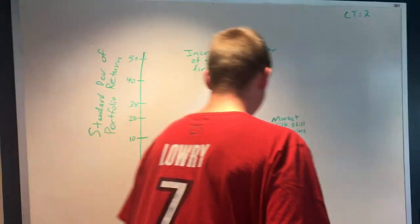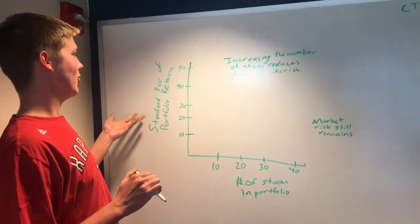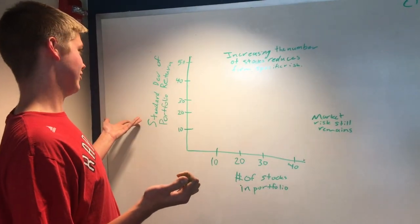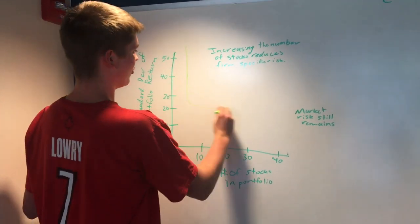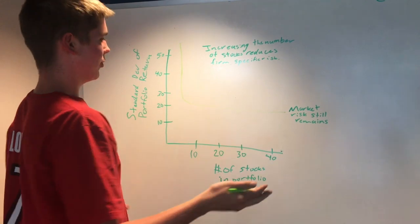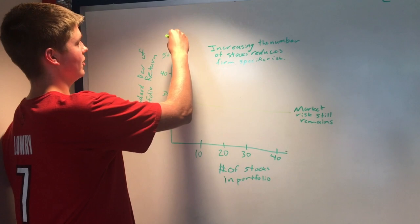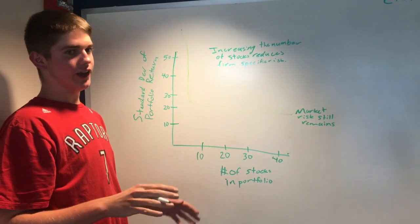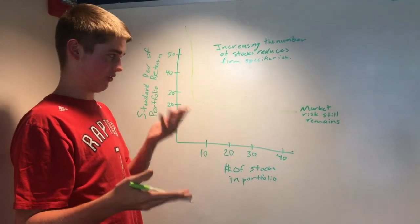I'm going to walk you over to this graph here, Mr. Welter, where we present to you what we would call the standard deviation of portfolio return, or the risk associated with this. As you can see from this graph, the more stocks you own, the more you're able to reduce firm-specific risk. The fewer stocks you actually own, the more risky your portfolio will be, and you'll have a chance for a greater return, but also a chance for a negative return on investment.